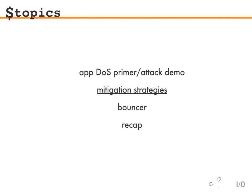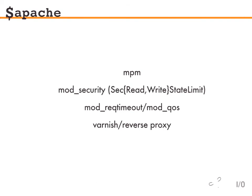Let's talk about some mitigation strategies. In Apache, there are a few things you can do: mod_security, mod_request_timeout, mod_qos. These are pretty effective, but they're confined to a single Apache instance. Out of those running Apache, quite a few run more than one instance. If we're defending on a per-server basis, that's a good start, but it's not necessarily the most effective way. You can also put Varnish in front — it can probably handle a lot of connections — or any form of reverse proxy.